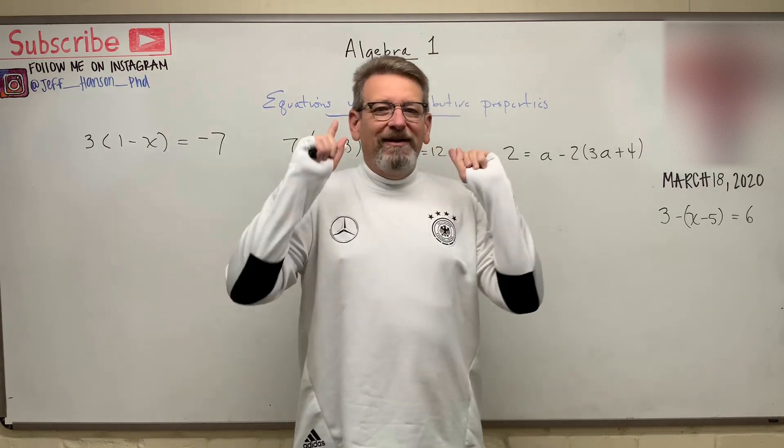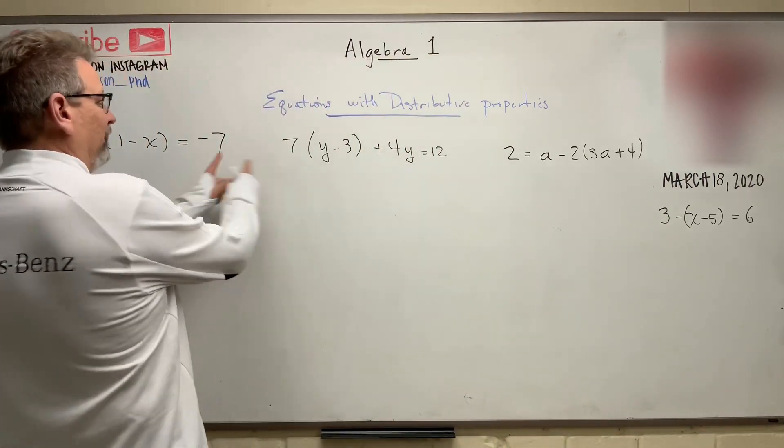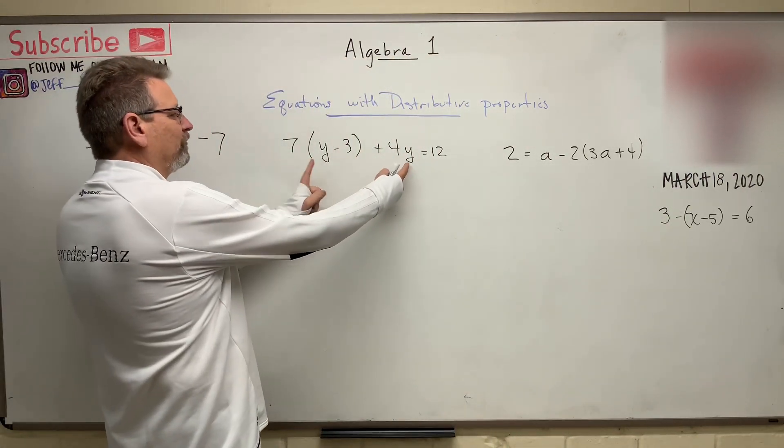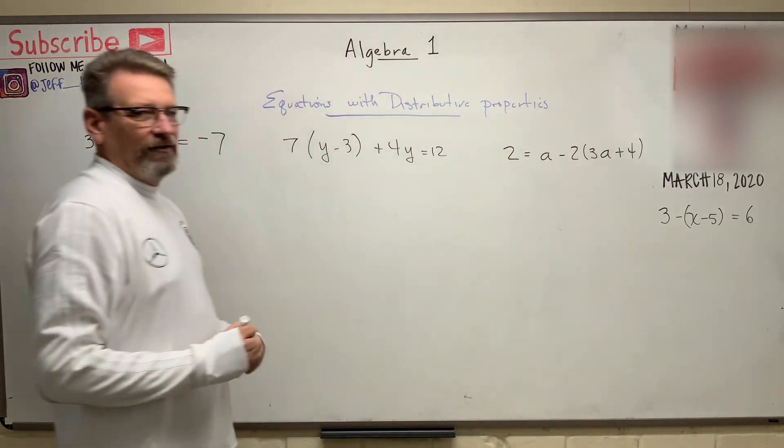The objective here is the same: isolate the variable and solve for the unknown. In this one it's going to be x, over here I'm going to solve for y, and then over here I'm going to solve for a, and over there I'm going to solve for x. So here we go, distributive property in action.